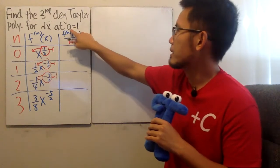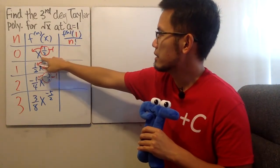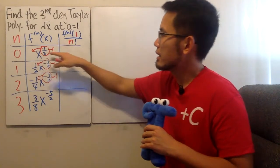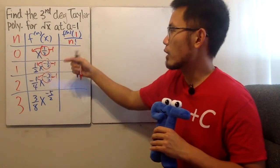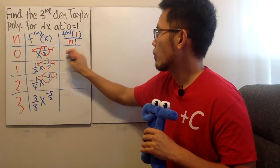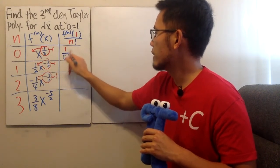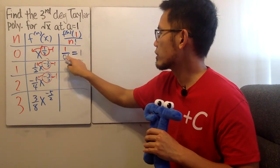Well, plugging number time. Here, plugging 1 in here for the x. That's nice. 1 to the 1 half power is just 1. Divide it by 0 factorial. So this right here is just going to give us 1 over 0 factorial. And that's very nice because all in all, that's going to give us just 1.